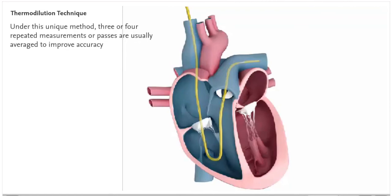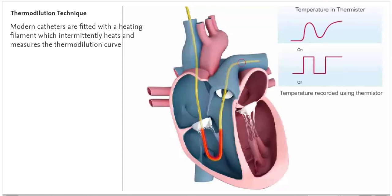Under this unique method, three or four repeated measurements or passes are usually averaged to improve accuracy. Modern catheters are fitted with a heating filament which intermittently heats and measures the thermodilution curve.